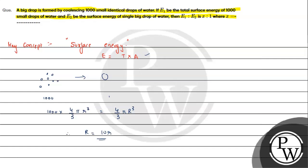Now for the energy, E1 is the energy of 1000 small drops. E1 will be equal to 1000 × surface tension × 4πr². Similarly, E2 will be equal to surface tension × 4πR².